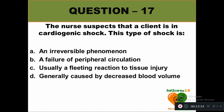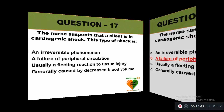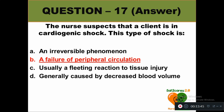Question 17: The nurse suspects a client is in cardiogenic shock. This type of shock is: option A an irreversible phenomenon, option B a failure of peripheral circulation, option C usually a fleeting reaction to tissue injury, option D generally caused by decreased blood volume. The right answer is option B — cardiogenic shock is a failure of peripheral circulation.